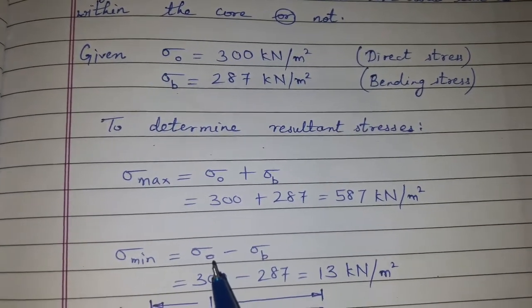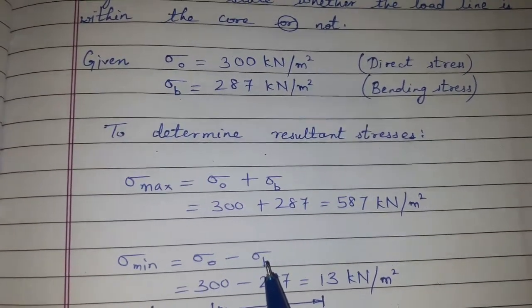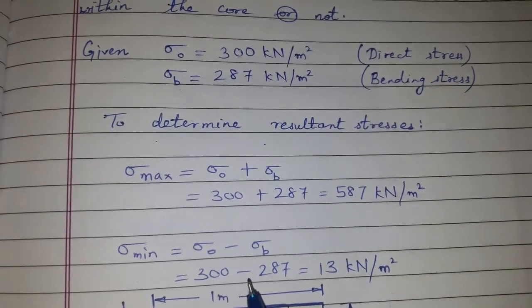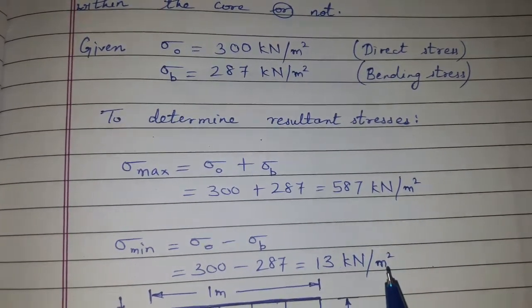And sigma minimum is sigma 0 minus sigma b, that is direct stress minus bending stress. So we get 300 minus 287, that is 13 kN per meter square.